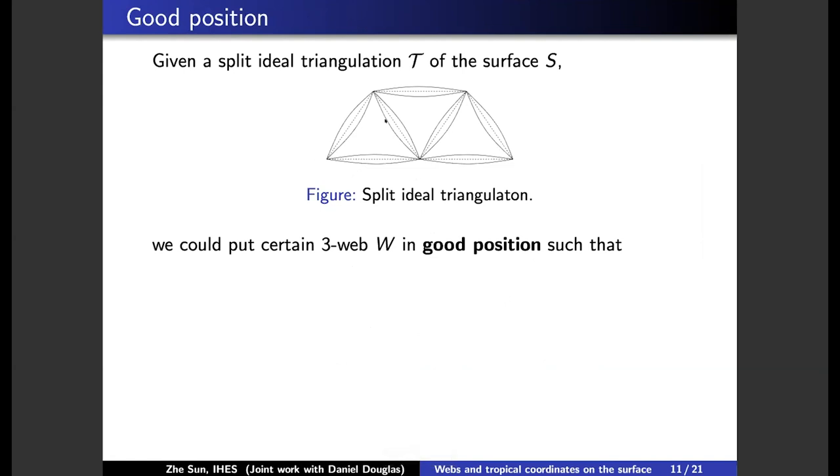And then we flatten the edges. For each edge, we flatten the edge, and we flatten it to be two edges. So actually we double the edges. And then we have triangles, ideal triangles in the interior. And then we have bigons in between the two ideal triangles.